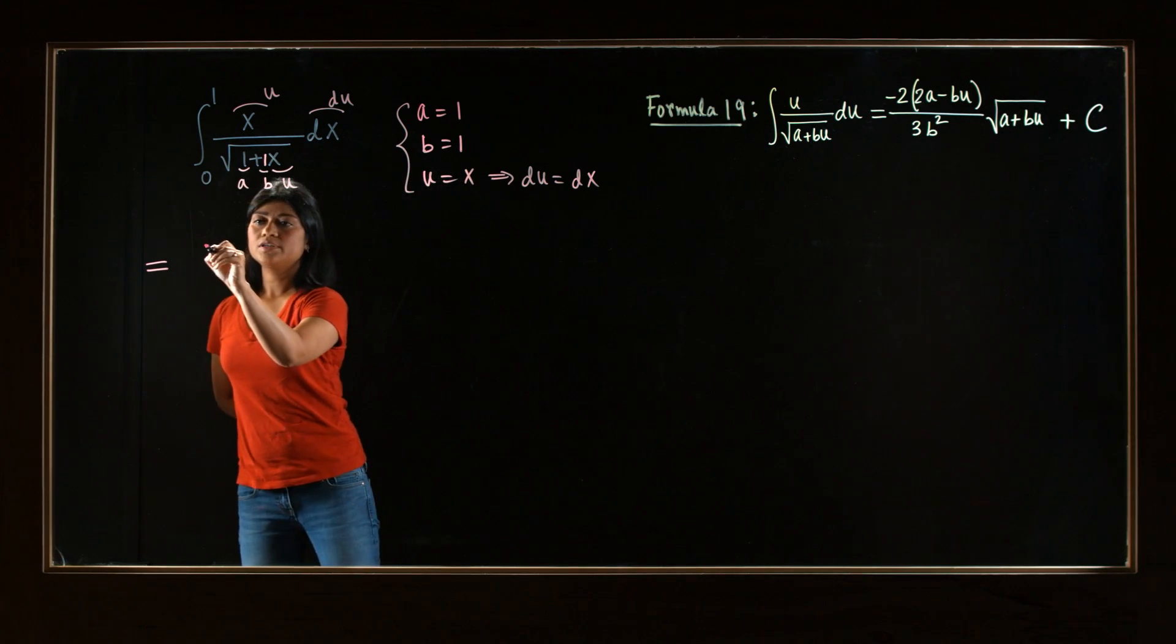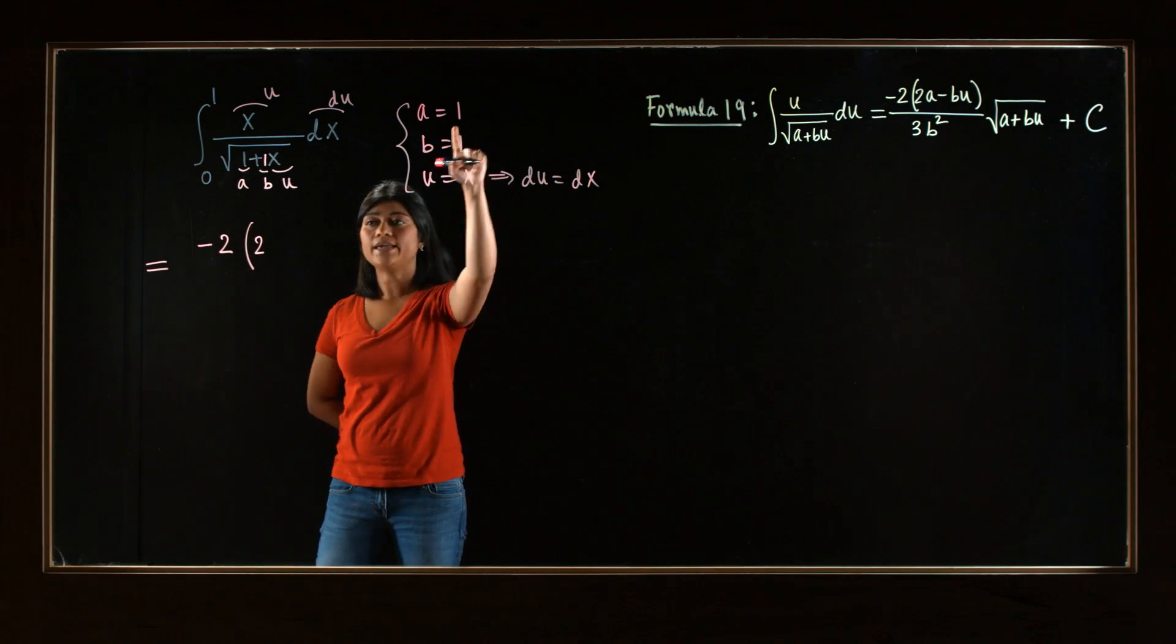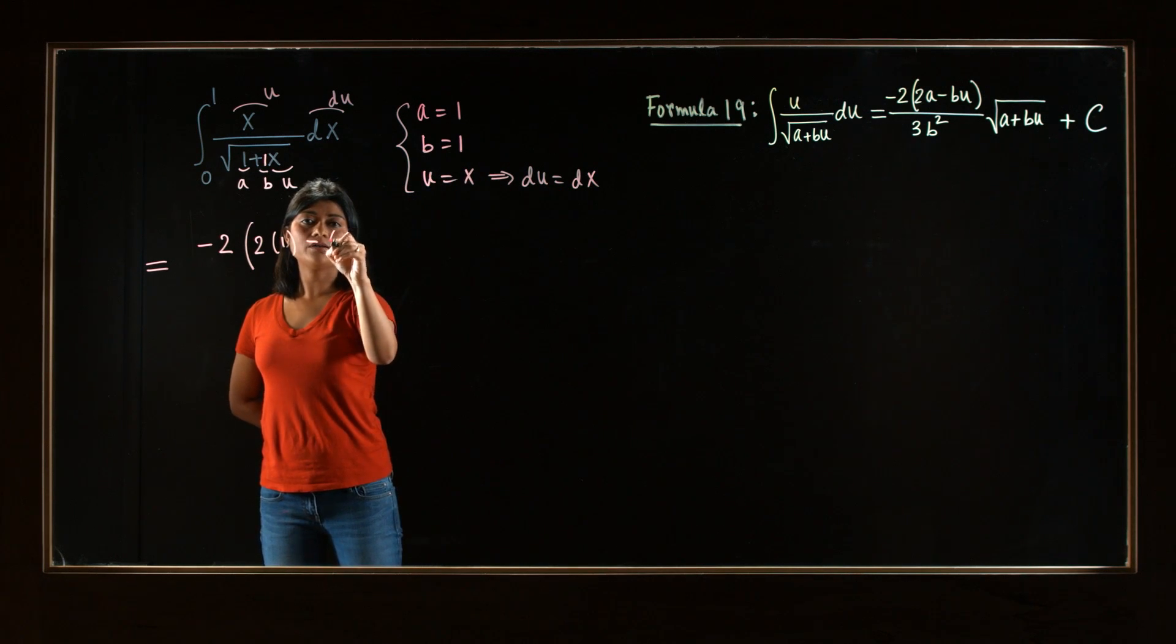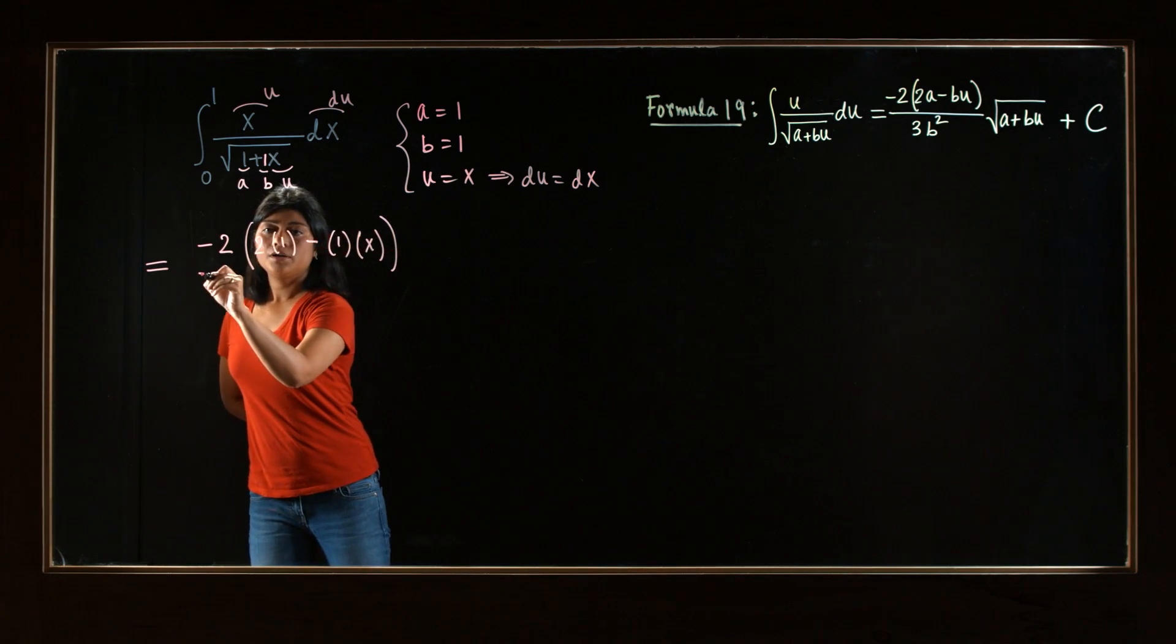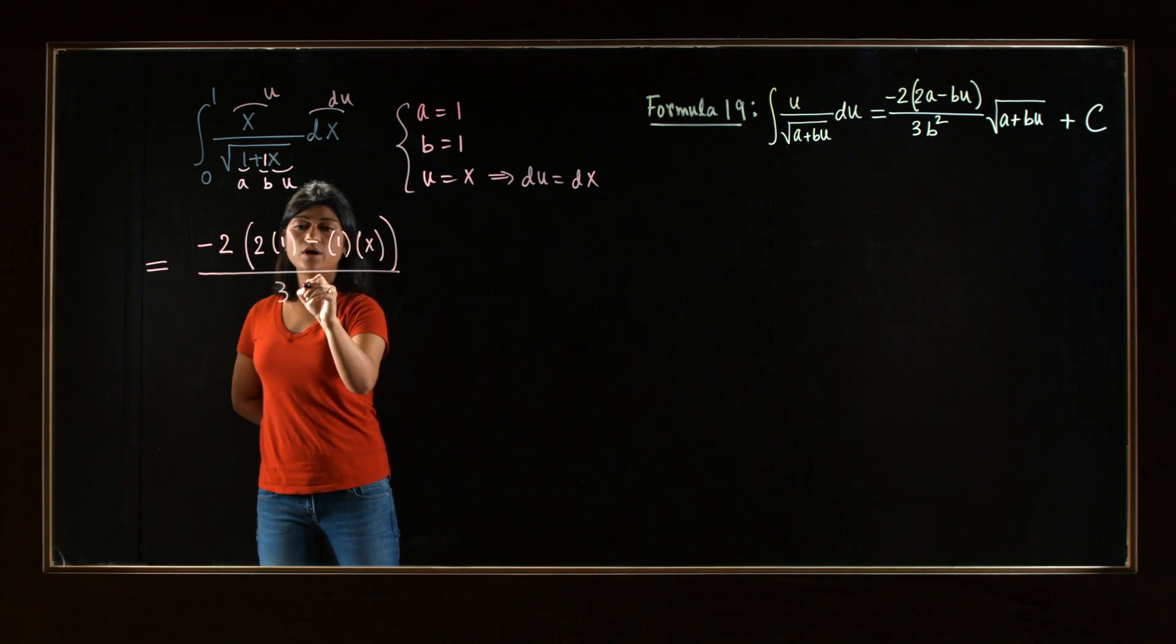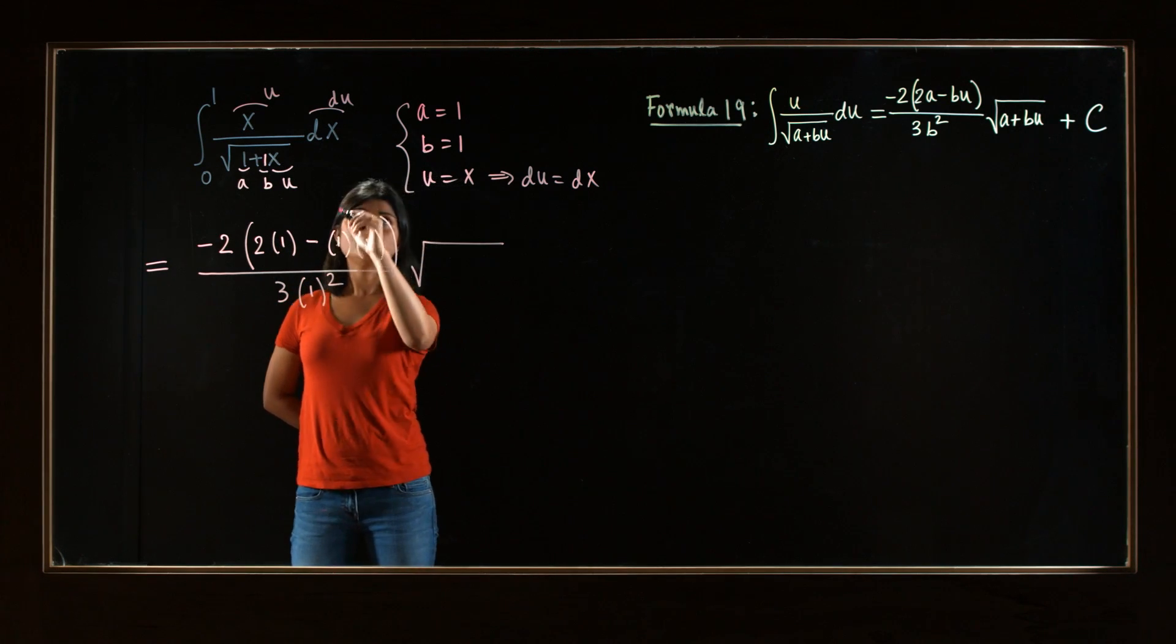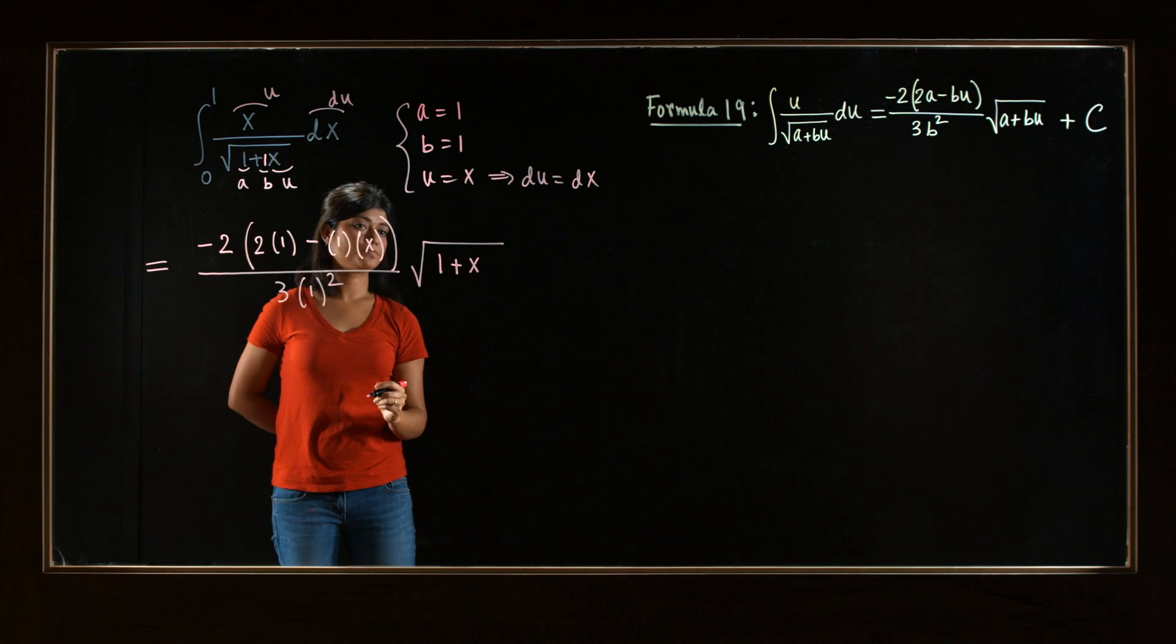So what we will have is negative 2 times 2a, and a is 1, so 2 times 1, minus bu. b is 1, and u is just x. Divide the whole thing by 3 times b squared. b is 1 again. And then, this is multiplied by the square root, a plus bu. So 1 plus b times u is just x.